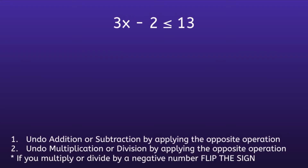Hello Scam Squad. Today we are solving two-step inequalities. And just like when we solve equations, we want to get the variable by itself on one side of the inequality sign. The first example is 3x minus 2 is less than or equal to 13.